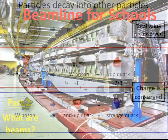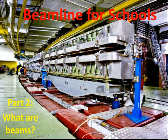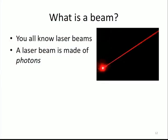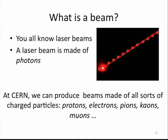Now we're inviting you to come work with a beam. So let's talk about beams. What are beams? One type you know is a laser beam. I have one right now - my pointer is made of a laser beam. What we don't see is that a laser beam is made of photons, little particles inside it. At CERN, we can produce beams made of all sorts of charged particles: protons, electrons, pions, kaons, muons, all the particles I just mentioned.